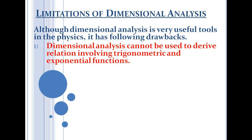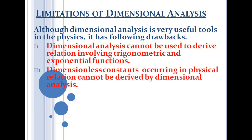The second drawback is that physical relations cannot be derived by dimensional analysis if they involve dimensionless constants. For such purposes, experimental methods or mathematical analysis should be used to determine the dimensionless constants. Dimensional analysis cannot be used to derive dimensionless constants.